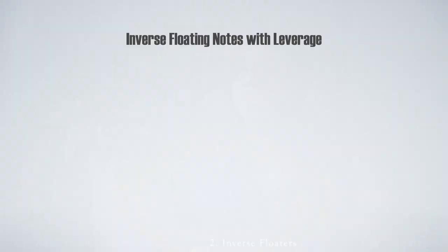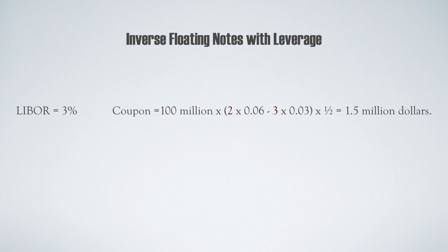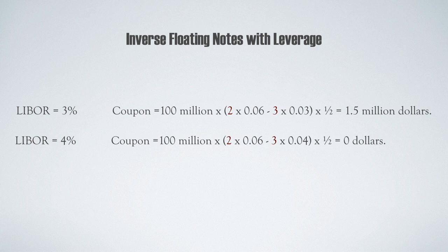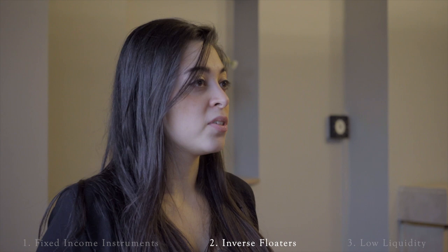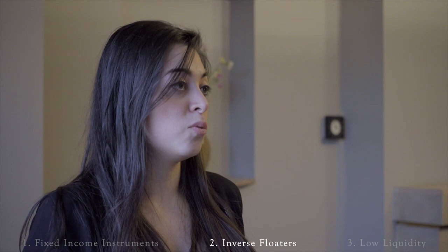Consider an inverse floater that pays two times fixed interest rates set at 6% minus three times LIBOR. For a five-year $100 million dollar inverse floater with 3% LIBOR, the coupon payment would be 1.5 million dollars. For 4% LIBOR, the coupon payment would be zero. With an unlevered floater, a 1% change in the variable rate results in a 25% change in the coupon, opposed to the leveraged inverse floater where a 1% change leads to a 100% increase or decrease in coupon payment. Thirdly, low liquidity: having only 3% cash in the portfolio can prove to be an issue when lenders require collateral calls on assets that decline in value, and it creates further difficulty for fund constituents to access capital.